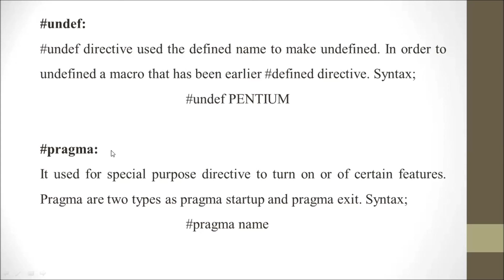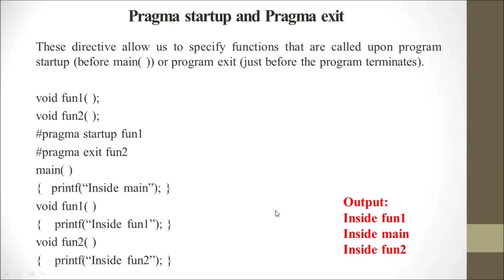The #pragma directive is a special-purpose directive used to turn on or off certain features. Pragma has two types: pragma startup and pragma exit. The syntax uses #pragma followed by the name.